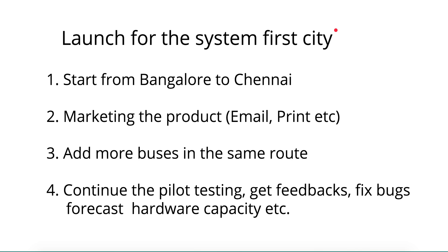To scale a system like redbus, we launch for the first city — for example, Bangalore to Chennai. Only that route is visible in the system, and customers can book tickets for that route. In parallel you do marketing through email or print, so you start receiving more customers. The more customers you get, the more defects you discover, and you get to know the system very well so you can fix defects and scale to meet demand.